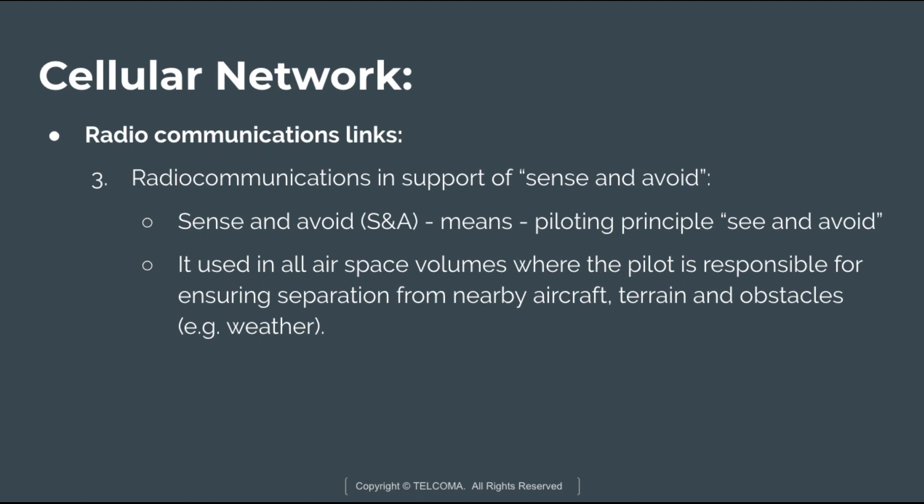The third type is radio communication in support of sense and avoid. Sense and avoid refers to the piloting principle of see and avoid. It is used in all airspace volumes where the pilot is responsible for ensuring separation from nearby aircraft, terrain, and obstacles such as weather. To determine the appropriate spectrum requirement for the see and avoid function, there are two main aspects: first, all RF equipment designed to collect raw data related to the sense function will have specific requirements depending on the ITU service involved; second, the proper operation of this see and avoid function will be permanently and regularly checked by the UACs.